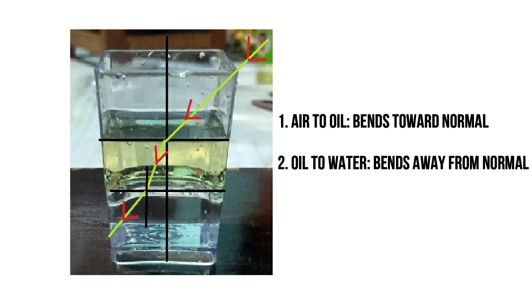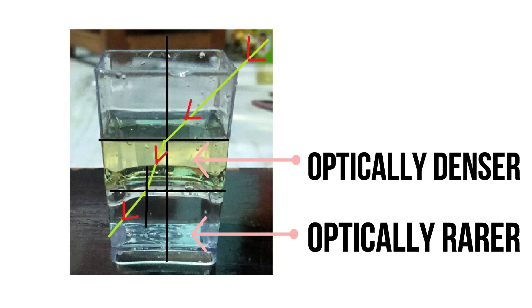When light is travelling from air to oil it must bend towards the normal. And when light is travelling from oil to water it bends away from the normal as oil is optically denser than water.